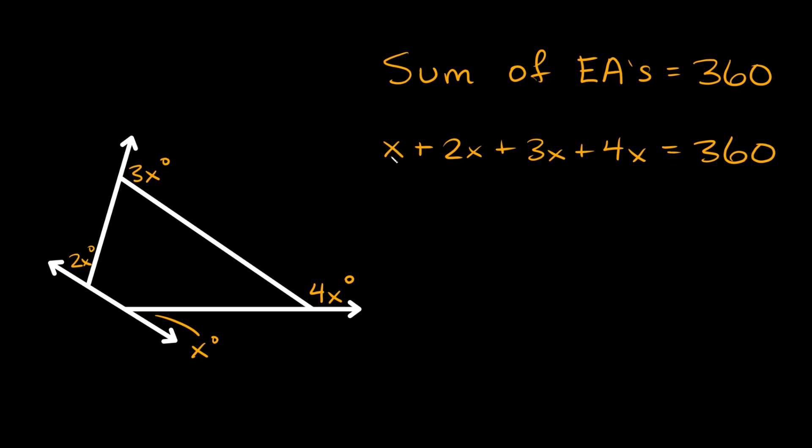So x or in other words 1x so we get 1 plus 2 plus 3 plus 4 is equal to 10. So we get 10x is equal to 360. So then here to solve for x we'll divide both sides by 10. So then we get that x is equal to 36 degrees.